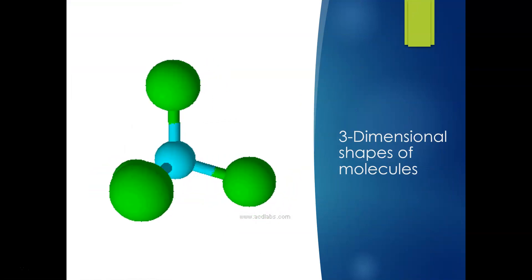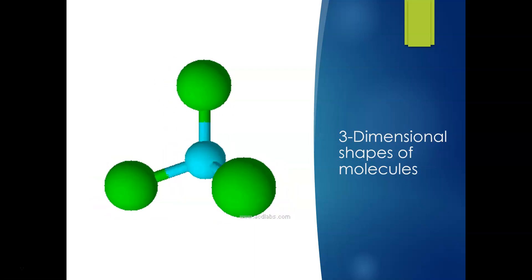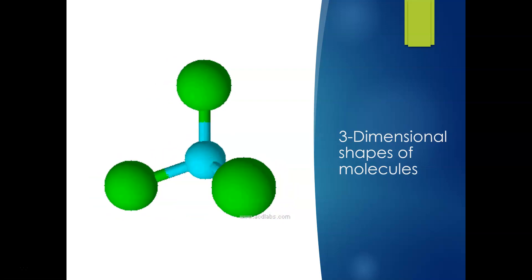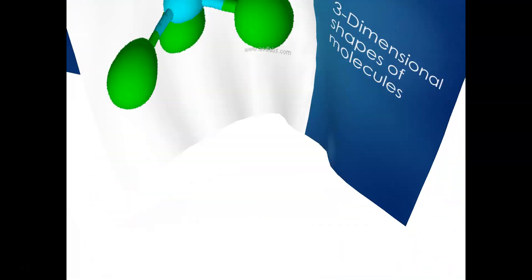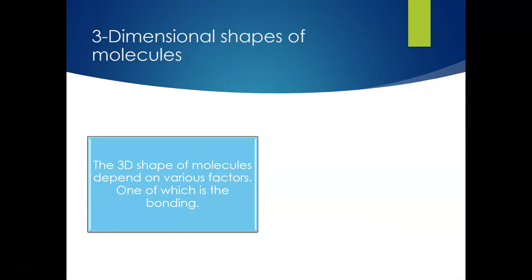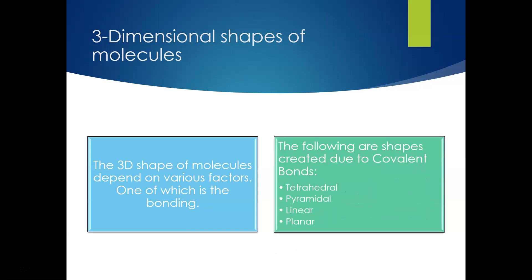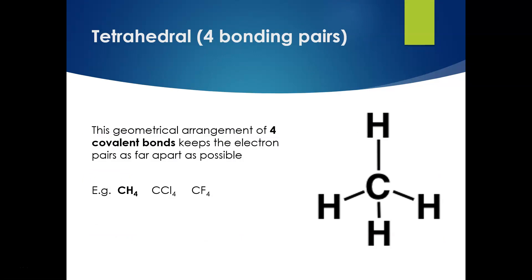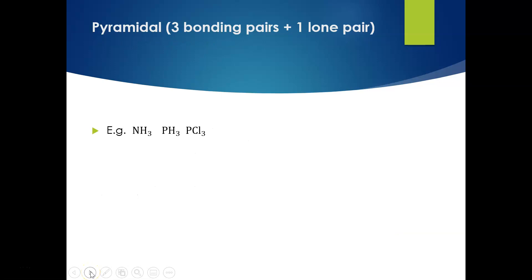Next we're going to look at the three-dimensional shape of molecules. We always draw molecules 2D on paper, but we need to remember that things in science are 3D — there's that extra dimension. The 3D shape of molecules depends on various factors, one of which is bonding. The following shapes are created due to covalent bonds: tetrahedral, pyramidal, linear, and planar. For tetrahedral, we've got four bonding pairs — a geometrical arrangement of four covalent bonds that keeps the electron pairs as far away from each other as possible, making this tetrahedral shape.